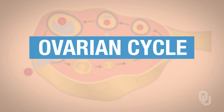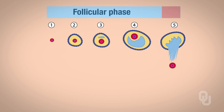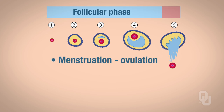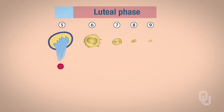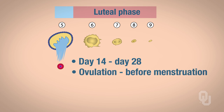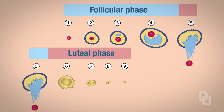Once again, we're going to begin with the ovarian cycle. With the ovarian cycle, the follicular phase is taking place from menstruation to ovulation, which is from day 1 to day 14. The luteal phase occurs from days 14 to days 28 — this is from ovulation to right before menstruation. You're going to need to remember that the ovarian cycle includes the follicular and the luteal phases.